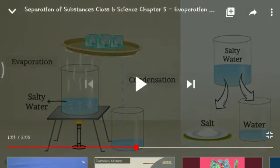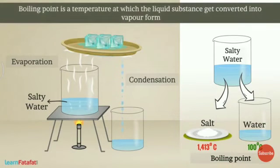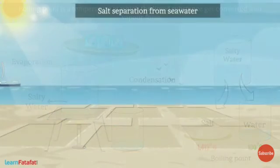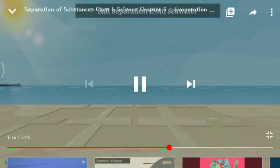Now let me show you one more method. Different liquids have different boiling points, and the boiling point is the temperature at which a certain liquid starts to boil. For example, the boiling point of water is 100 degrees Celsius, so at 100 degrees Celsius water will start boiling. This is just for your knowledge — it is not in your syllabus.